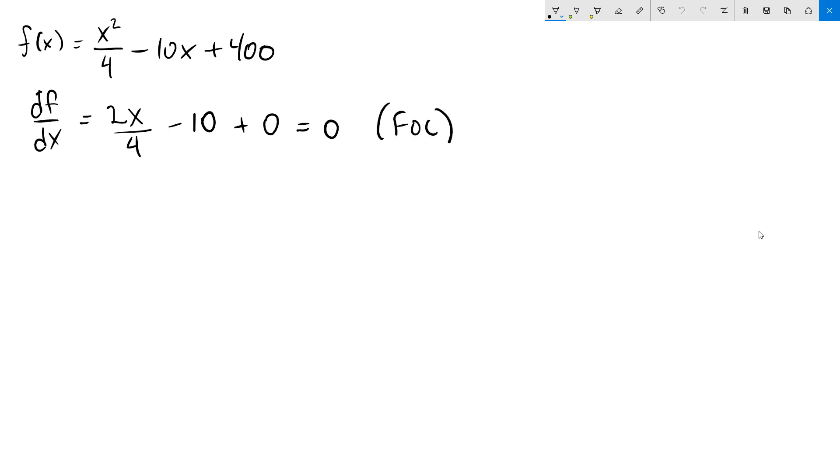Next we will use this result to solve for our extreme point for x. First note that 2x over 4 is just x over 2 minus 10 equals 0. I'm going to add 10 to both sides to get x over 2 equals 10, and then multiply both sides by 2 to get x equals 20.